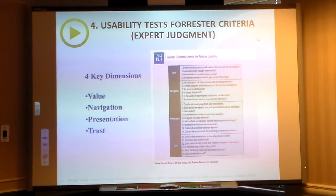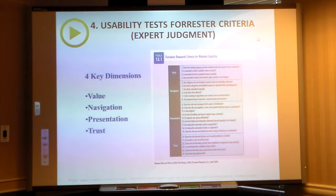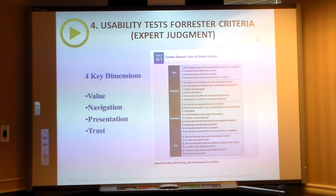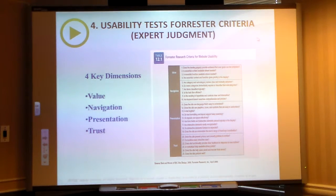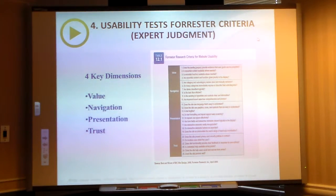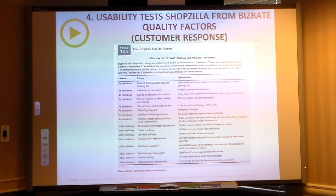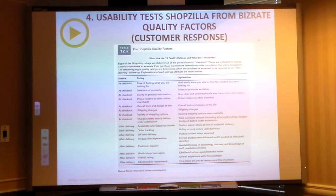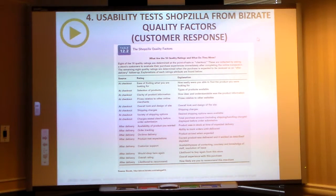In terms of what a usability test looks like, this is on page 333. It goes over how you can determine whether a website is usable using the value, navigation, presentation, and trust model. You can take this and apply it to other sites — the book provides an example, and you're welcome to delve into this on your own.